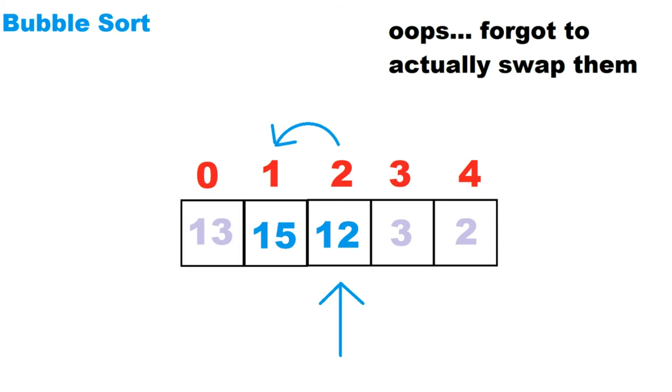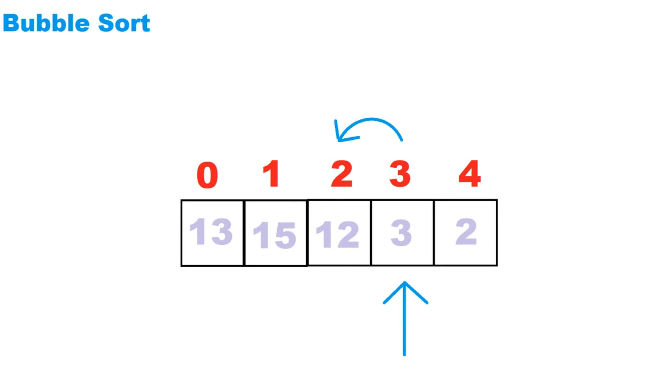After that, we move on to check the next cell, cell three. And here again, cell three has a value of three, and that's less than the one before, so they get swapped.